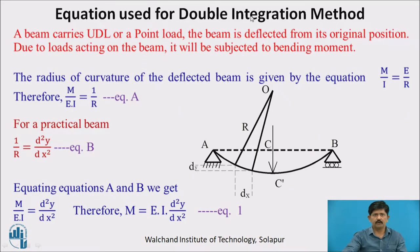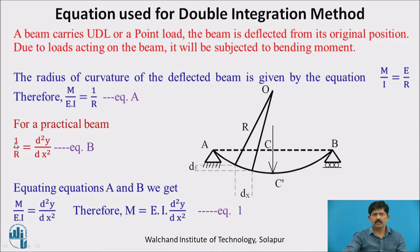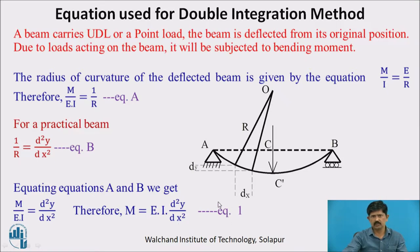The equation used for the double integration method: when a UDL or a point load acts on a beam, it gets deflected from its original position. The radius of curvature of the deflected beam is given by M/I = E/R, therefore M/EI = 1/R (equation A). Practically, 1/R = d²y/dx² (equation B). Equating A and B gives M/EI = d²y/dx², therefore M = EI·d²y/dx². This is equation 1, used for the double integration method.